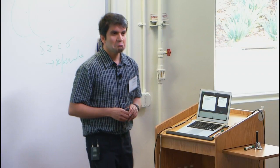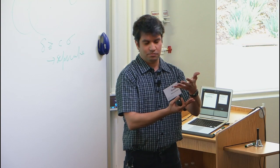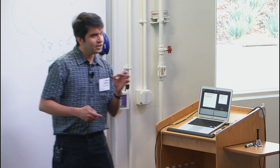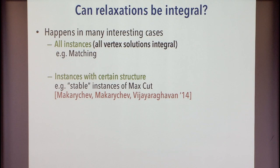Matching is one example — we know many examples of this. These are well studied, well known. Also really strong, because we're saying that for all instances, this relaxation in fact captures the problem exactly. What I'm looking for is something a little more interesting: where this doesn't happen for all instances, but it happens for instances with some structure, perhaps.